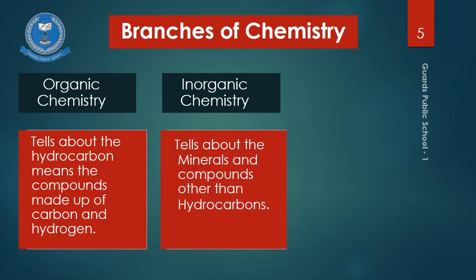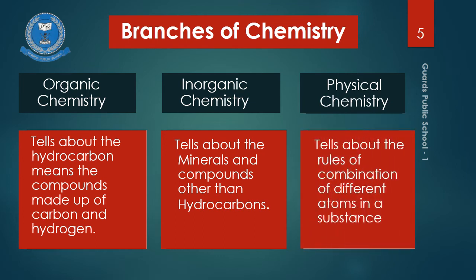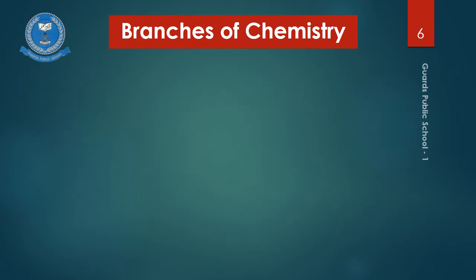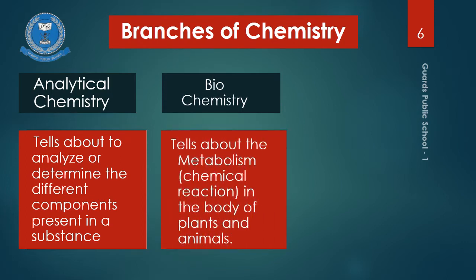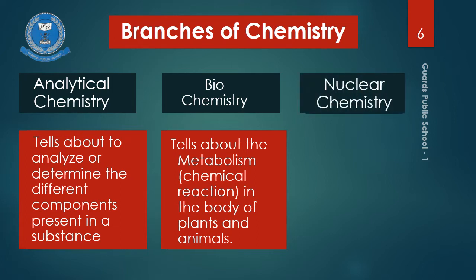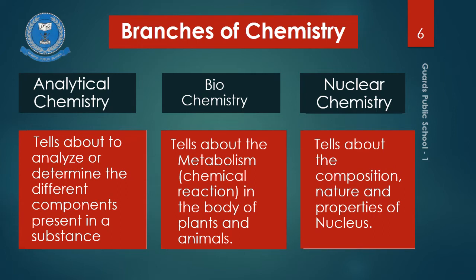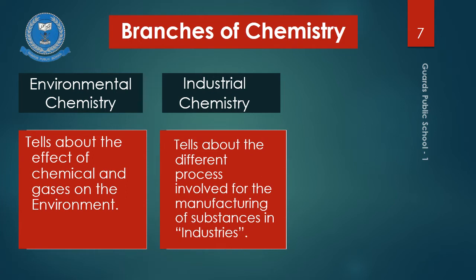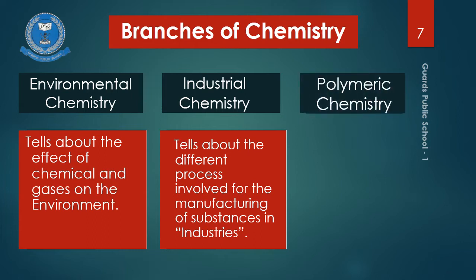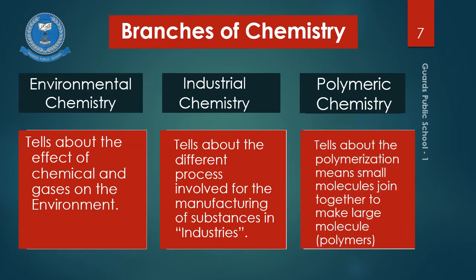The third branch is physical chemistry, which tells us about the rules of combination of different atoms in a substance. Analytical chemistry tells us how to analyze or determine the different components present in a substance. Biochemistry tells us about metabolism — meaning the chemical reactions taking place in the bodies of plants and animals. Nuclear chemistry tells us about the composition, nature, and properties of the nucleus. Environmental chemistry gives us information about the effect of different chemicals, gases, and temperature on the environment. Industrial chemistry gives information about industries and the different processes involved in manufacturing different substances. Polymeric chemistry gives information about polymerization — the process by which smaller molecules are joined together to form larger molecules known as polymers.